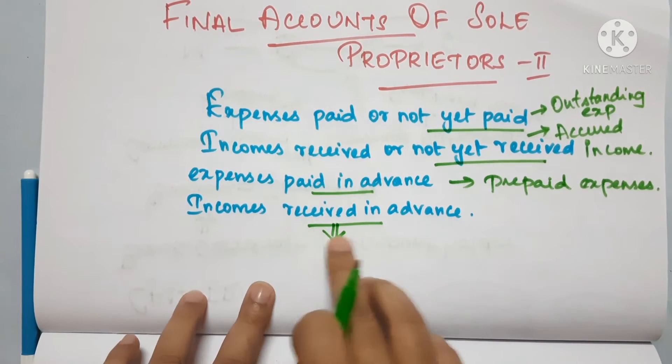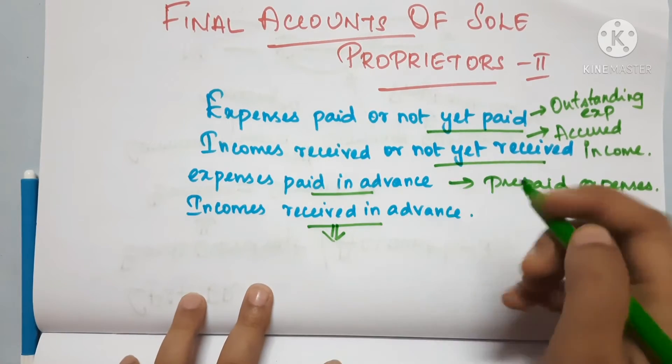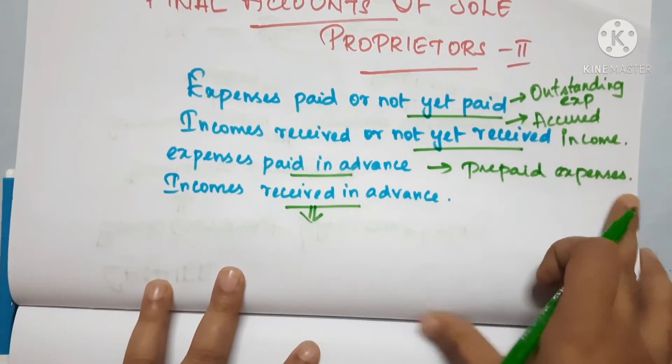Next is income received in advance — income received in advance. In terms of terminology, we will explain the difference between these terms.